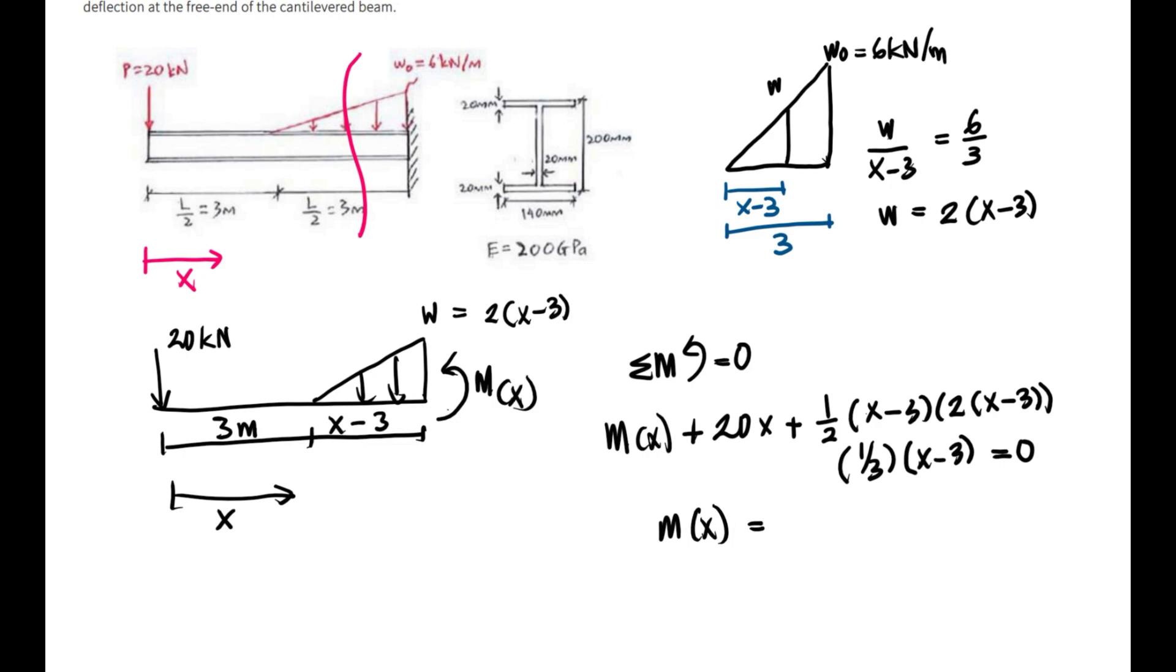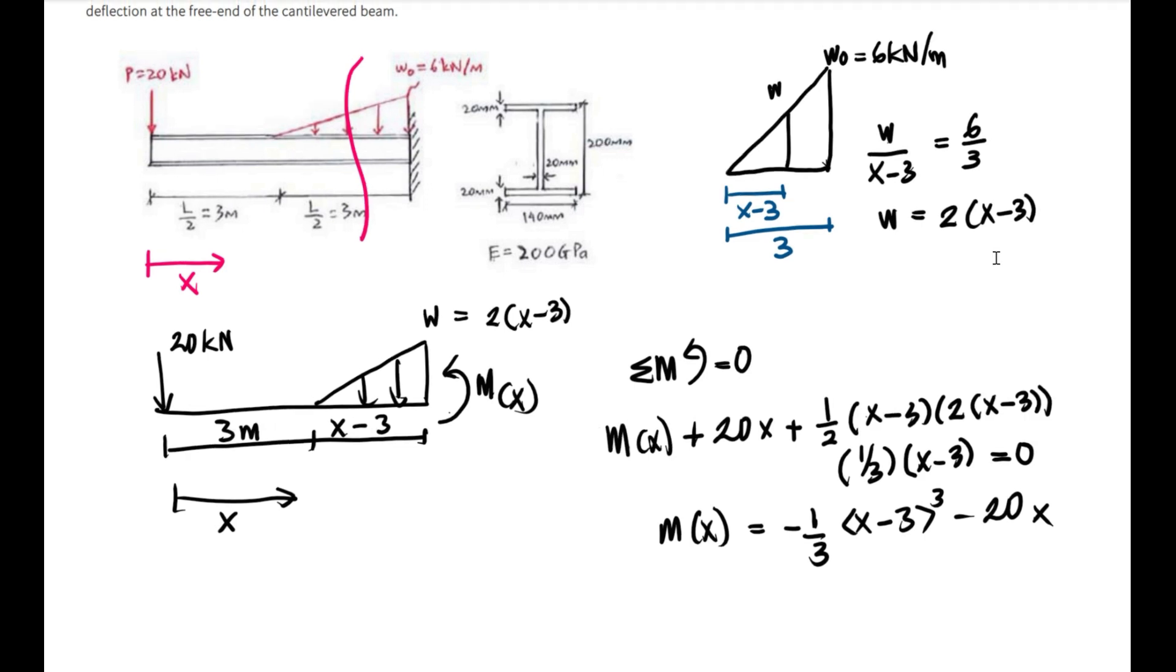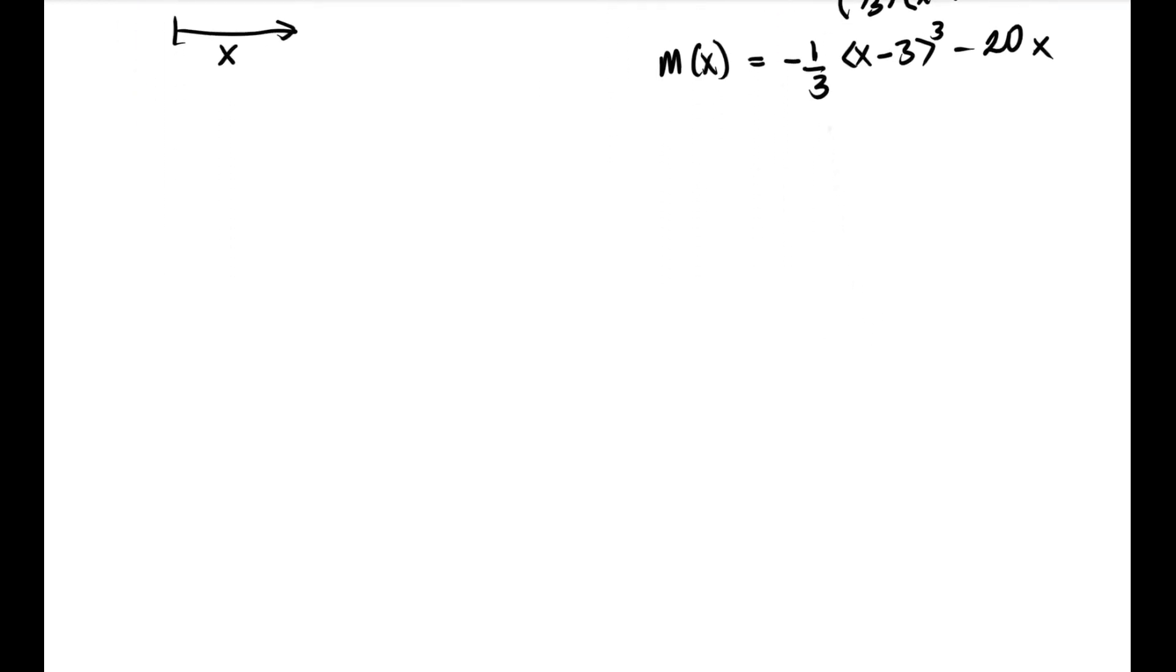So M(x) is equal to negative one-third (x minus 3) power of 3 minus 20x. Now we have already defined the internal moment, so we can find the slope and deflection equations based on the moment.